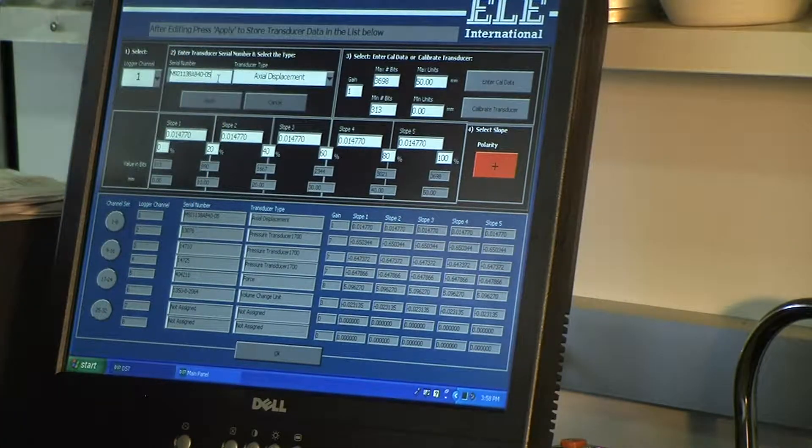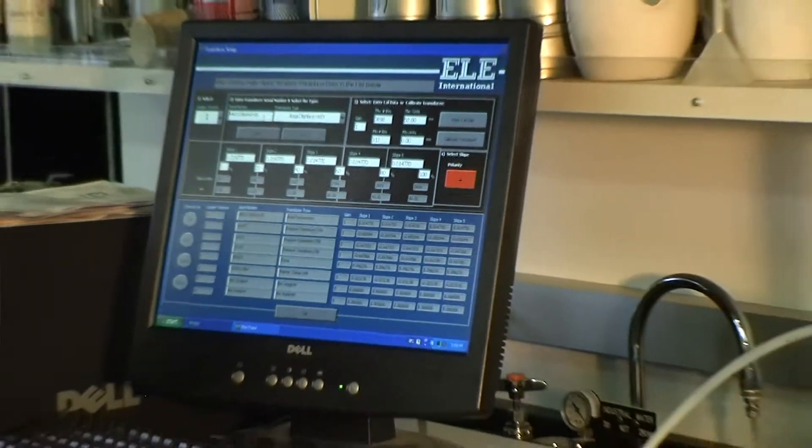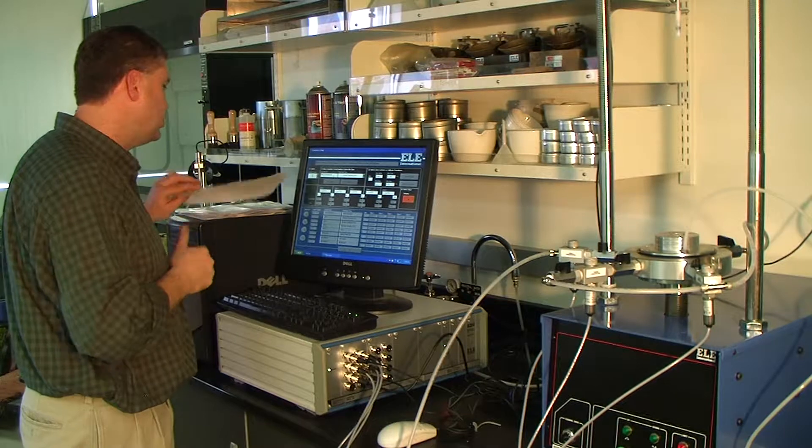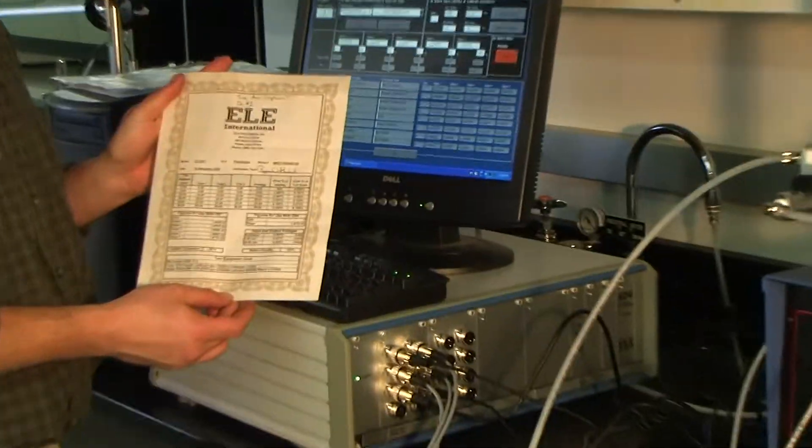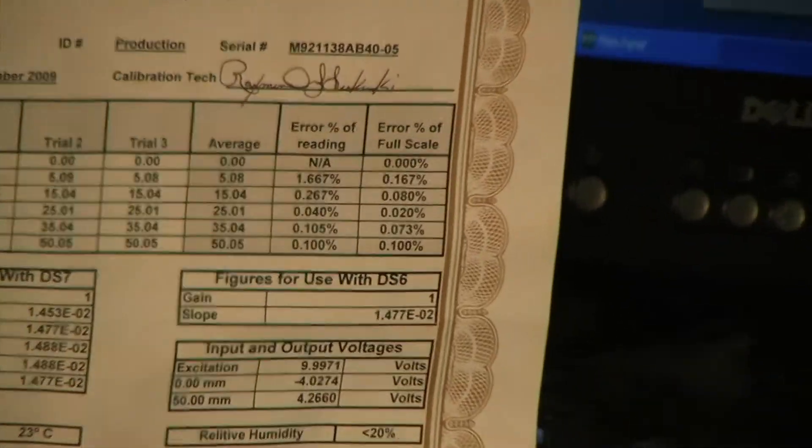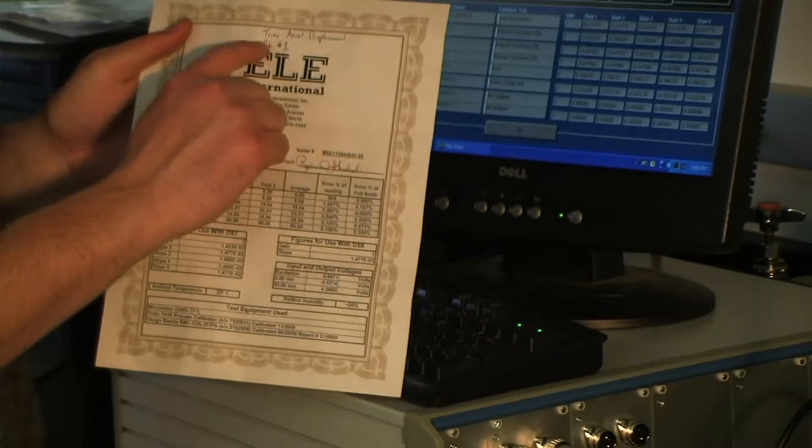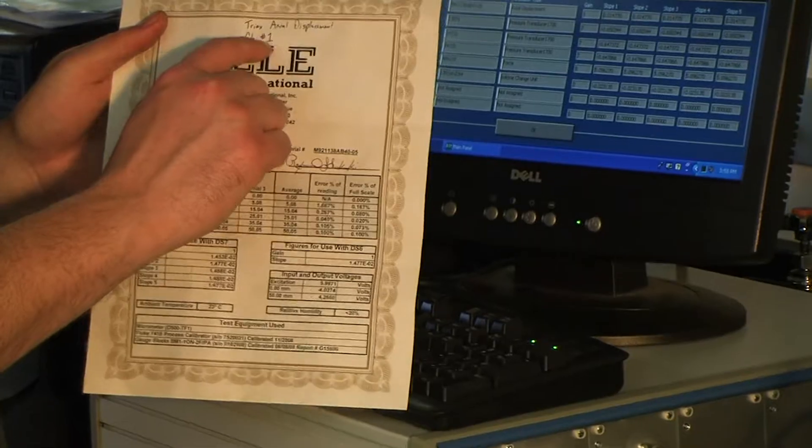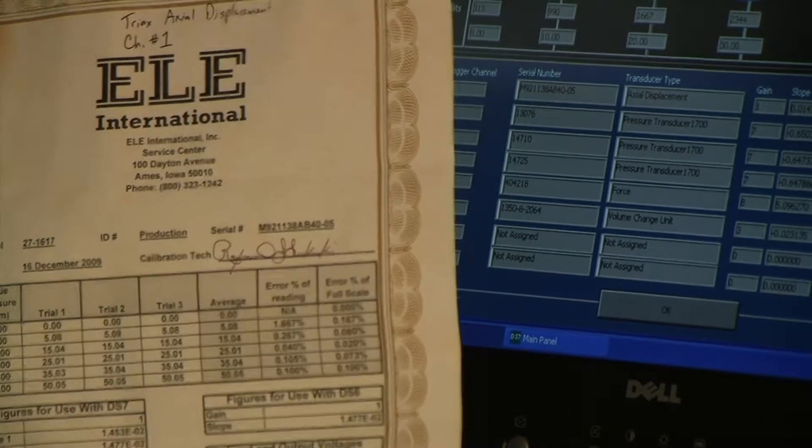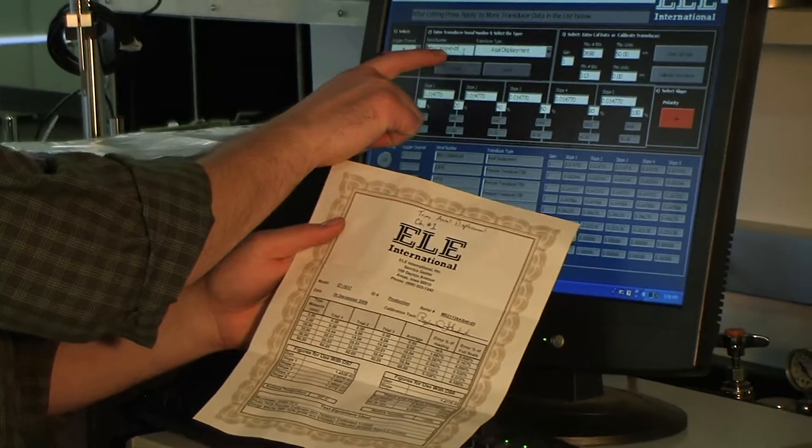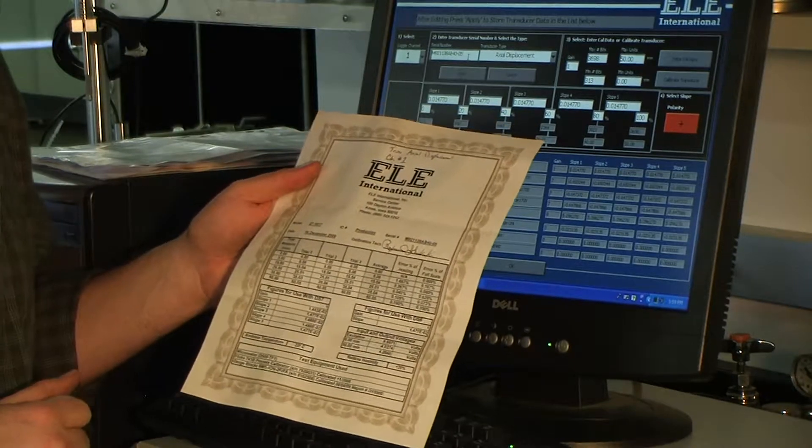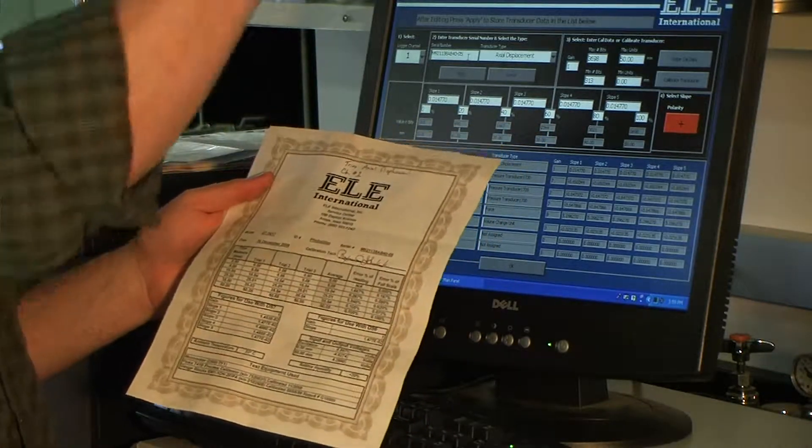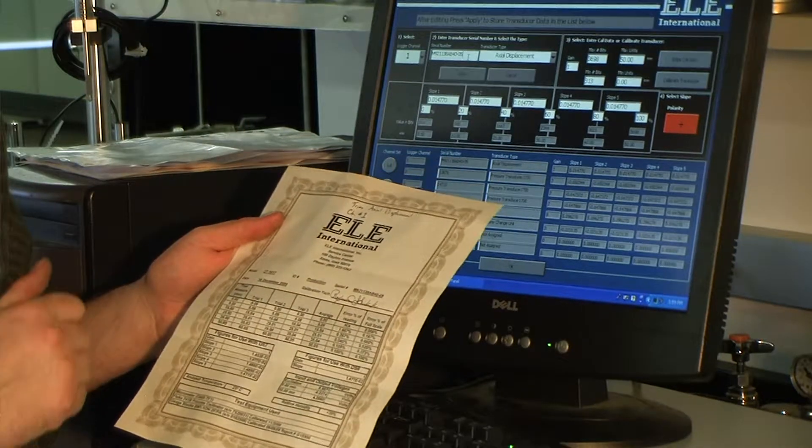This transducer is the axial strain transducer on the load frame itself. So I have, in the drop-down of the arrow, I have what channel logger we want to look at. We want channel 1. Here I entered the serial number off of the transducer itself. And I also verified that the transducer serial number matches what the serial number is on the calibration sheet that ELE sends out with the transducer itself. This is one version of the calibration sheets that are sent with each transducer. And if you notice, I wrote on the top, triaxial axial displacement channel number 1. So I've also written on here where that transducer should be plugged into for the ADU. And then I've verified the serial number on the screen with the serial number on this sheet and the serial number on the transducer device itself.